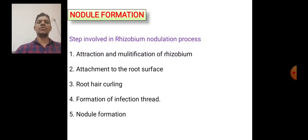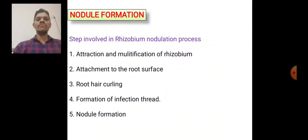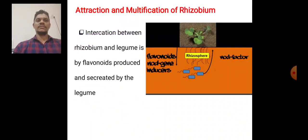The nodule formation process of Rhizobium involves several steps: first, the attraction and multiplication of Rhizobium; second, attachment to the root surface; third, root hair curling; fourth, formation of the infection thread; and fifth, nodule formation.